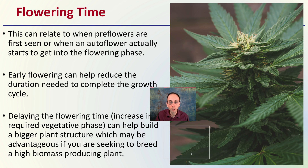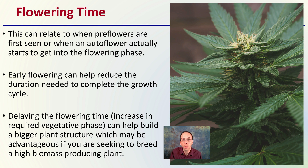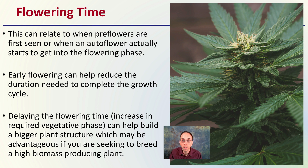Then there's flowering time, which can relate to when pre-flowers are first seen or when an autoflower starts to get into the flowering phase. Early flowering can help reduce the duration needed to complete the growth cycle, which is important for growers fitting more generations into the same time period. Delaying flower time can increase the required vegetative phase, which can help build a bigger plant structure — advantageous if you're seeking to breed a high biomass producing plant.